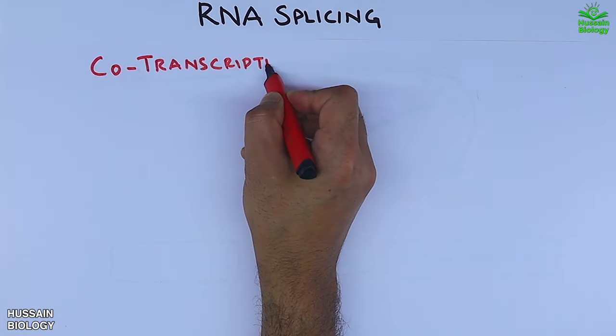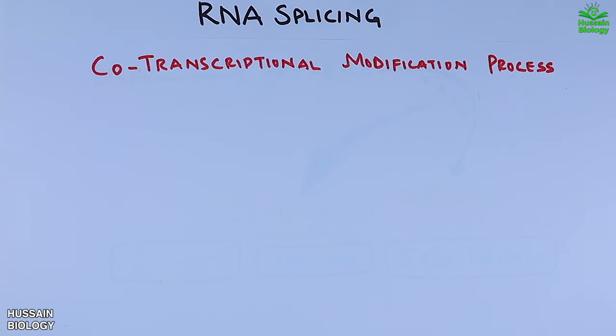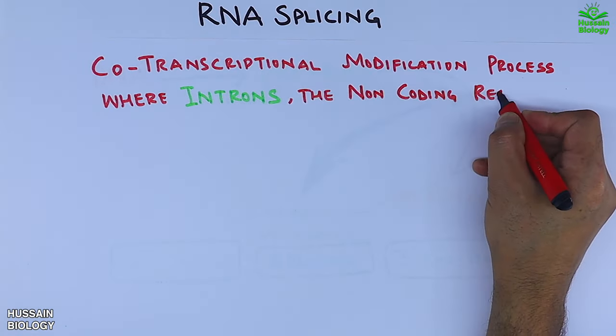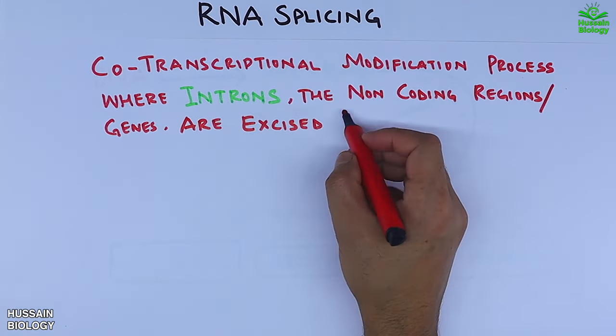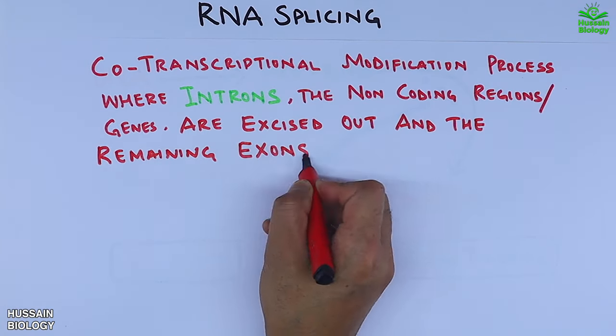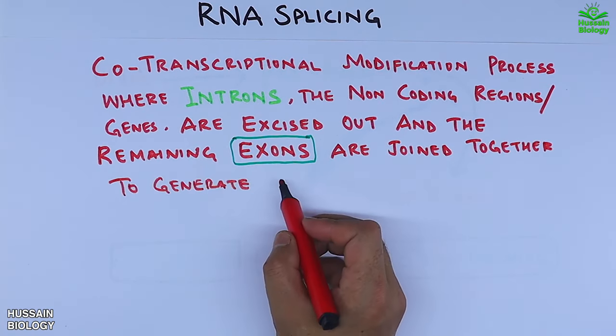RNA splicing is a co-transcriptional modification process where introns that are non-coding regions of genes are excised out, and the remaining exons are joined together to generate mRNA.